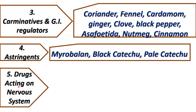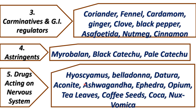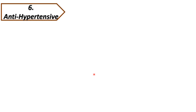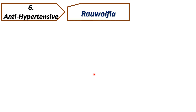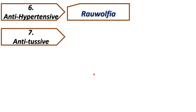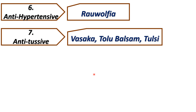Fifth is drugs acting on the nervous system, covering hyoscyamus, belladonna, datura, aconite, ashwagandha, ephedra, opium, tea leaves, coffee seeds, coca, and nux vomica. Sixth is anti-hypertensive drugs, for example rauwolfia. Seventh is anti-tussives, covering vasaka, tolu balsam, and tulsi.